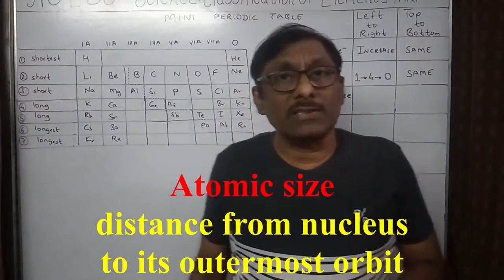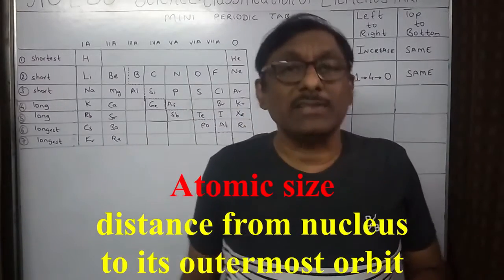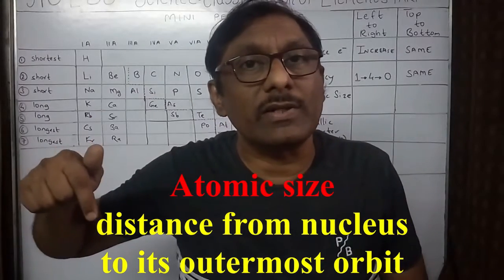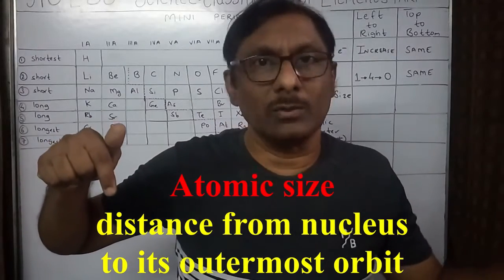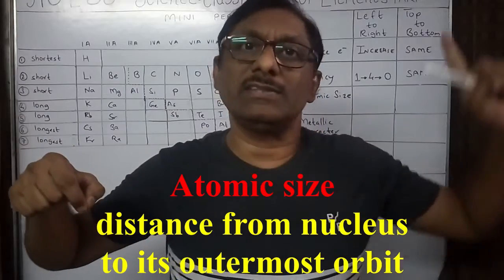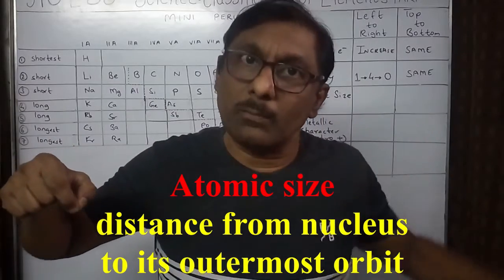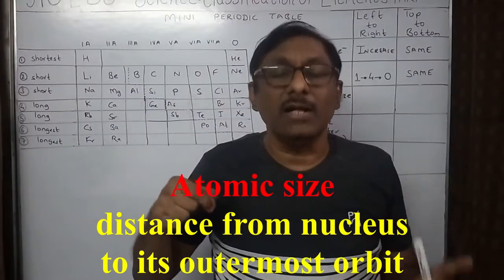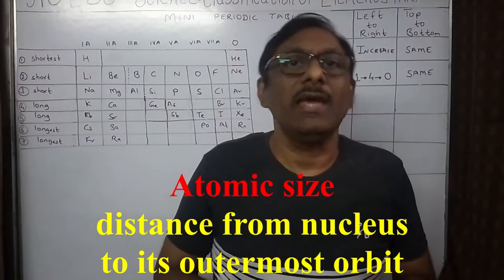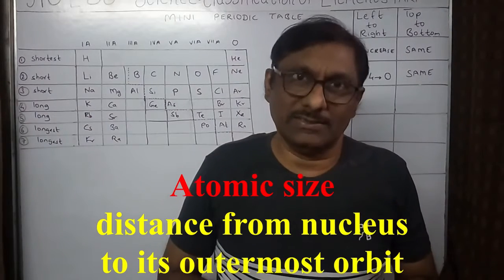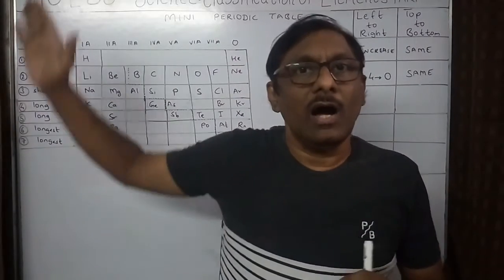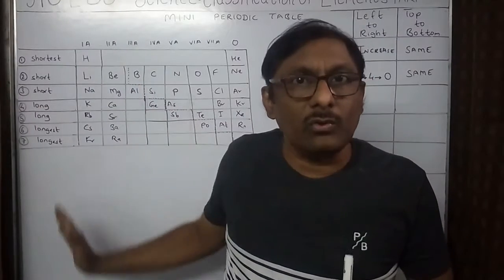Now let's concentrate on the next part: atomic size. Atomic size is the distance from the center of the nucleus to the outermost orbit. Center of the nucleus se outermost orbit tak jitna distance hota hai, us ko hum log bolte hain atomic radius, or atomic size.